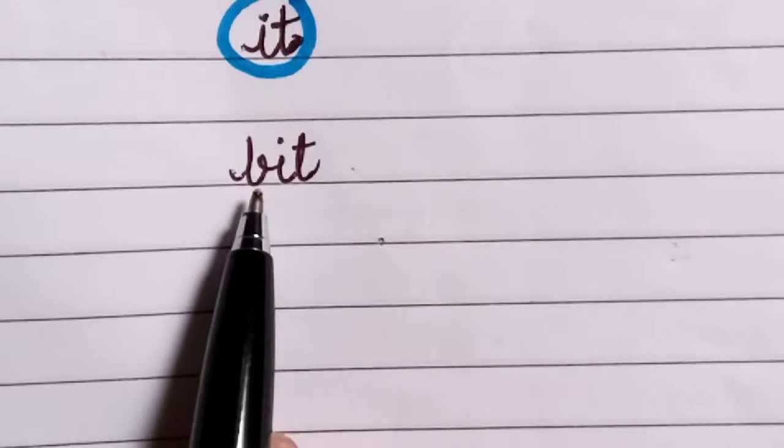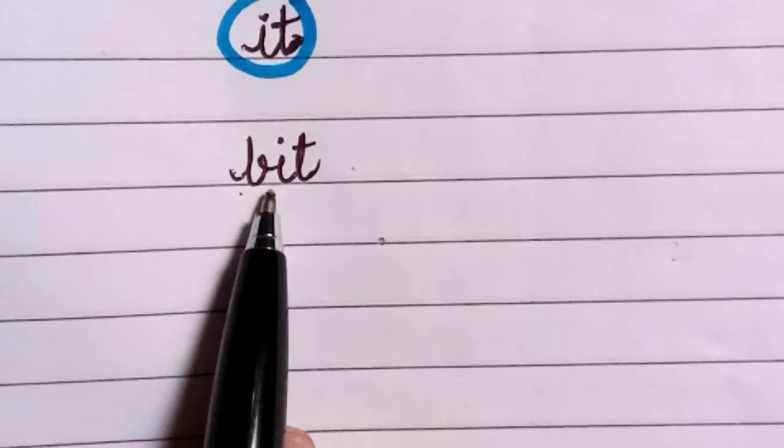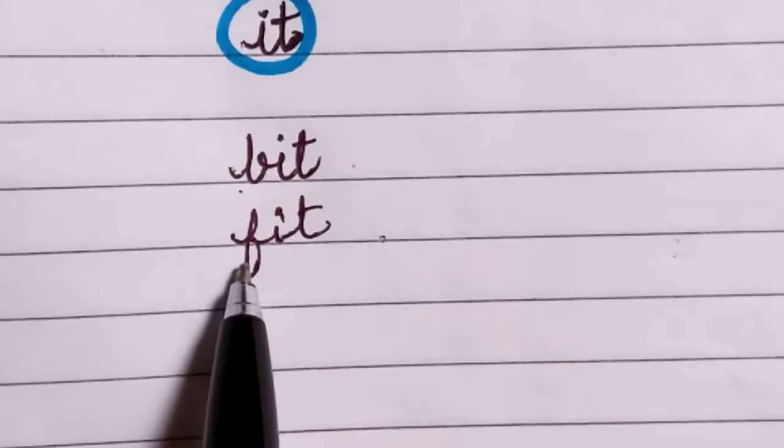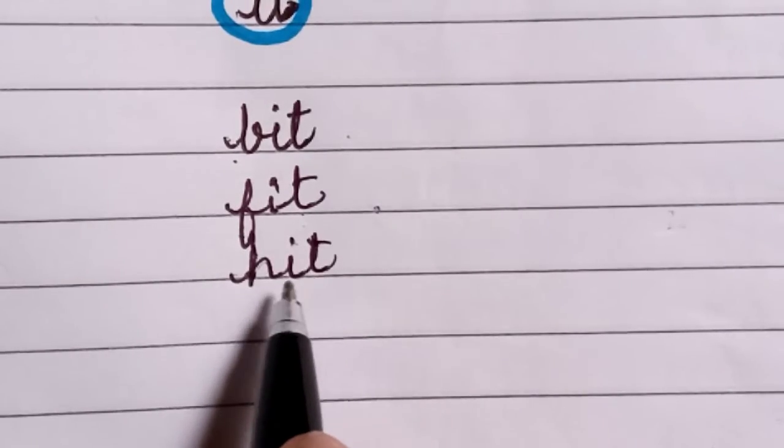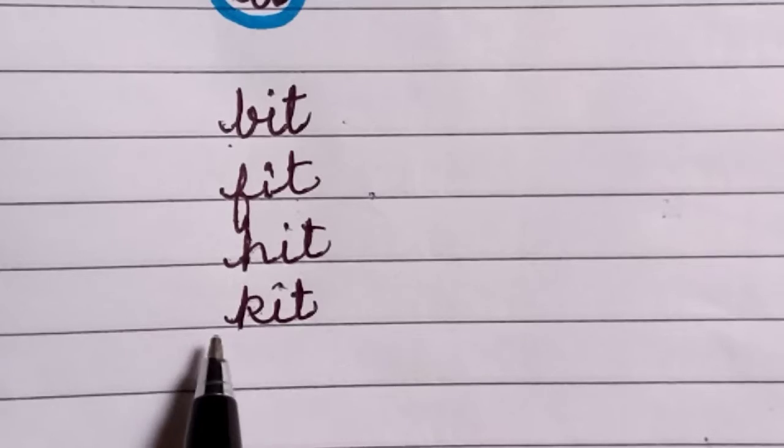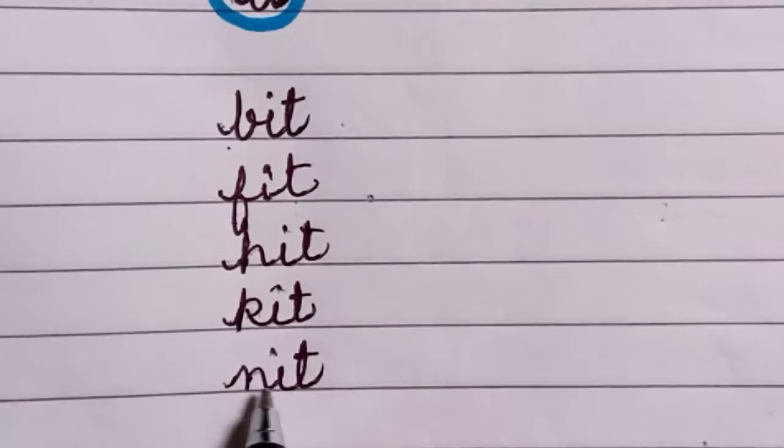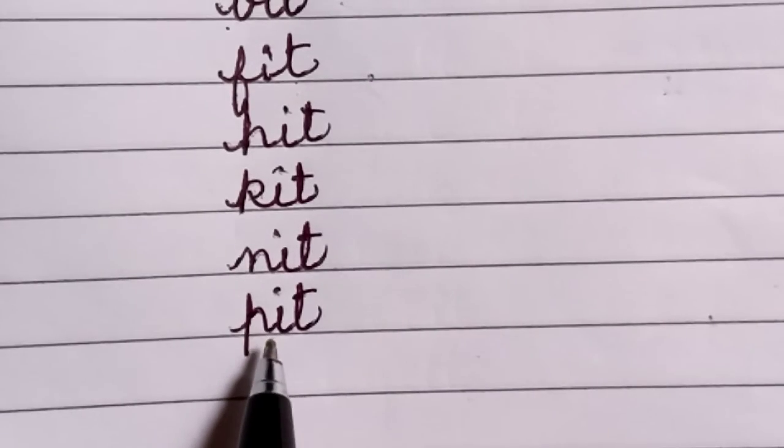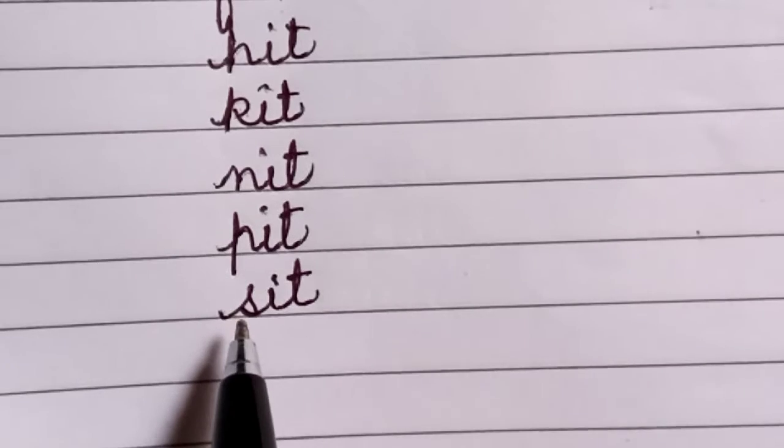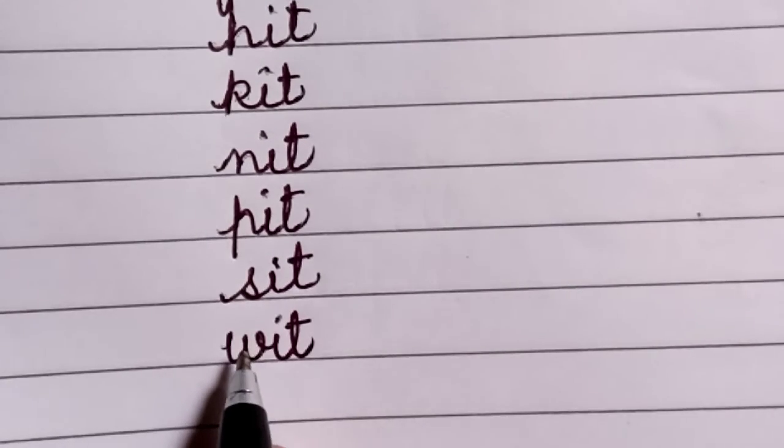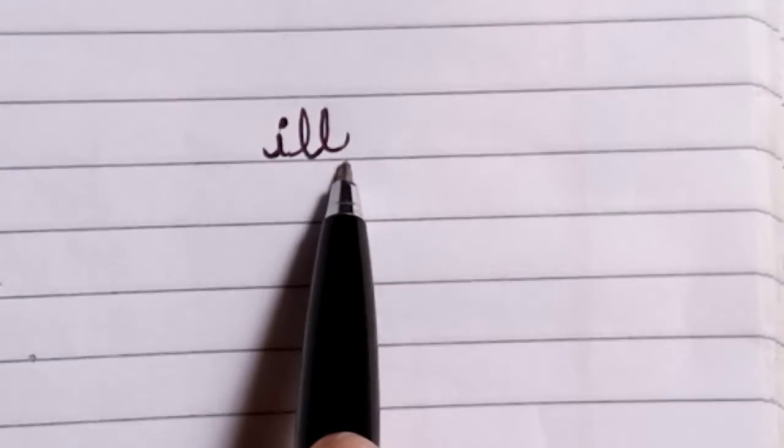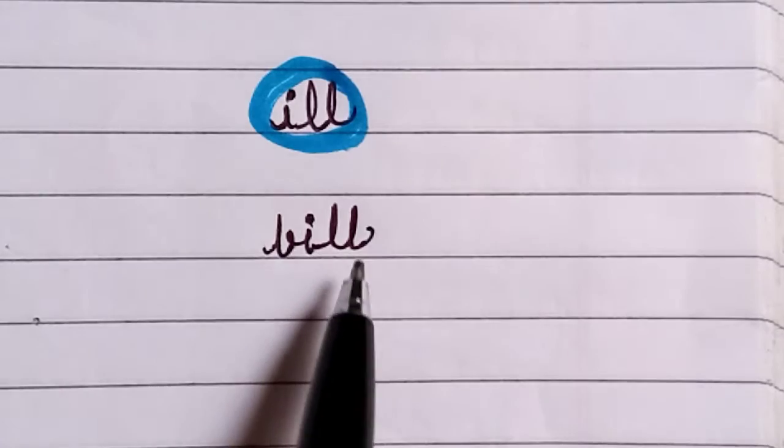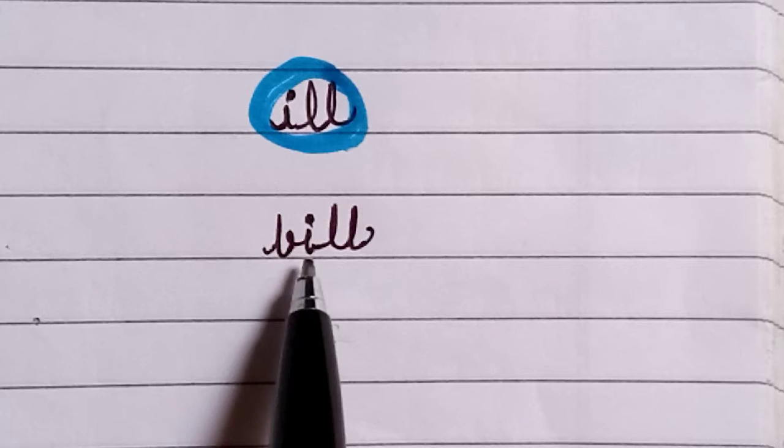Okay now children tell me this I, T, it. So this will be B, I, T, bit. And this F, it. Or you can say F, I, T, fit. H, I, T, hit. K, it, kit. N, it, knit. P, it, pit. S, it, sit. W, it, wit. Now this will be I, double L, il. Similarly try this B, il, bill.